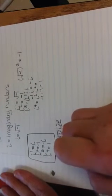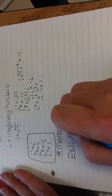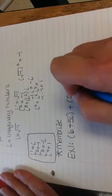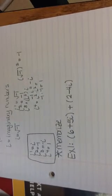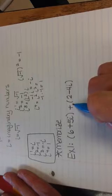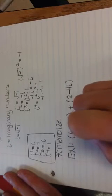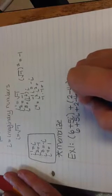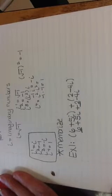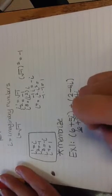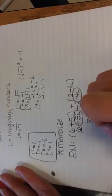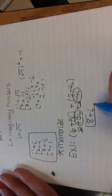Example 1: (6 plus 5i) plus (2 minus 4i). There are parentheses, so I need to distribute. In front of each set of parentheses, all I have is a positive 1, so I really have 6 plus 5i plus 2 minus 4i. Complex numbers have to be in a plus bi form. The real part is 6 plus 2, which is 8. The imaginary part is 5i minus 4i, which is 1i. So the answer is 8 plus i.